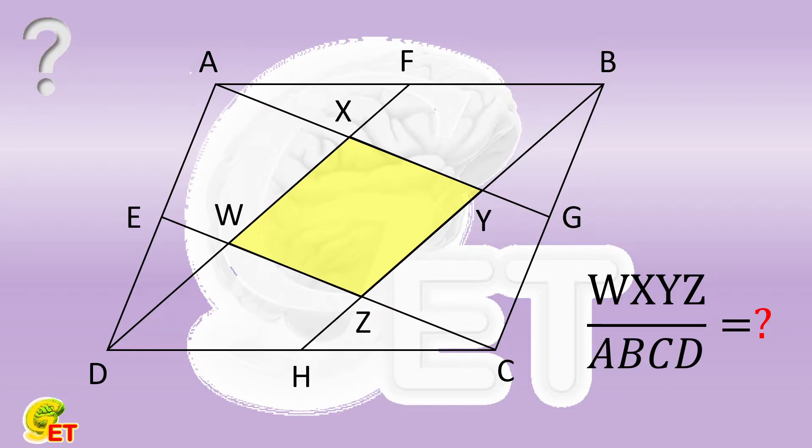Given a parallelogram ABCD, the midpoint of each side is labeled as E, F, G, and H, respectively. The connecting lines AG, BH, CE, and DF cut out a quadrilateral WXYZ inside the parallelogram.